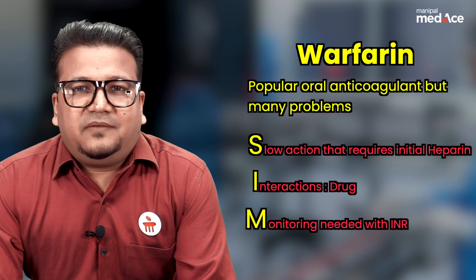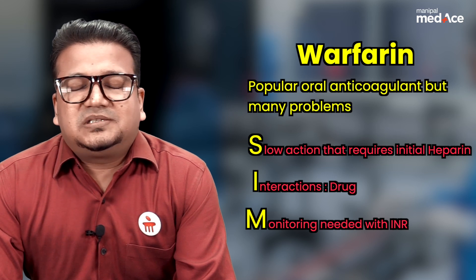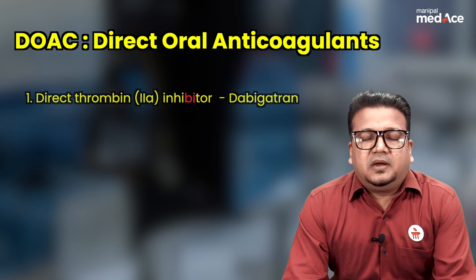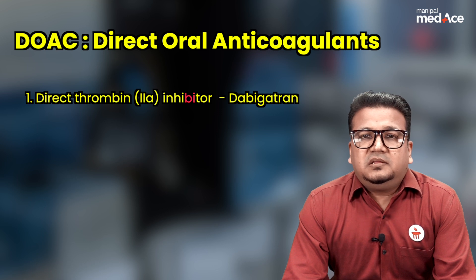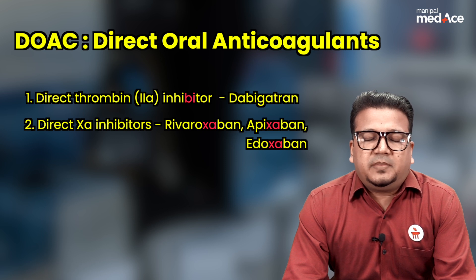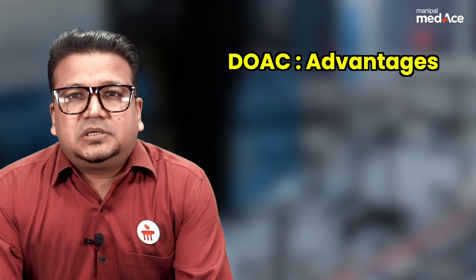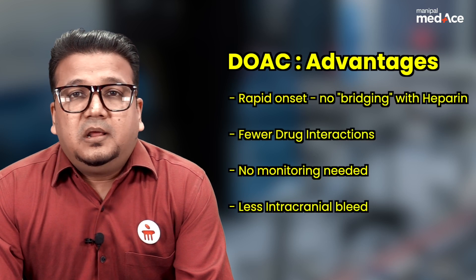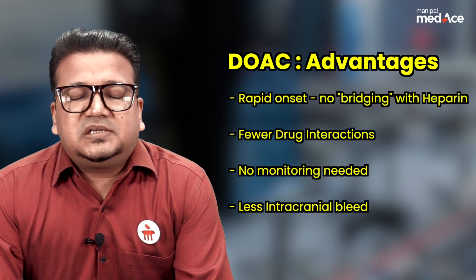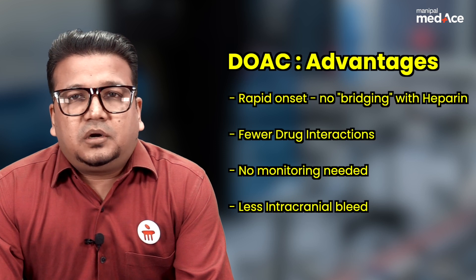To overcome these problems, we have developed two new classes of oral anticoagulants. First is dabigatran, which is a direct thrombin or factor 2a inhibitor. How will you remember? Dabigatran has 'bi' in the spelling — bi means 2 — so it is a factor 2a inhibitor. Second is apixaban, edoxaban, and rivaroxaban, which are direct factor 10a inhibitors. These new oral anticoagulants do not require monitoring, they have limited drug interactions, and they have a faster onset of action that does not require initial heparin therapy. So they are replacing warfarin as the preferred oral anticoagulant.